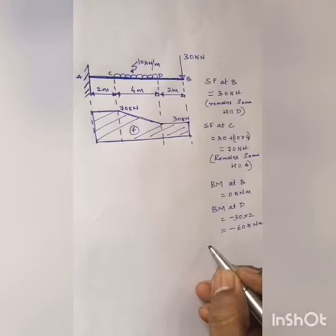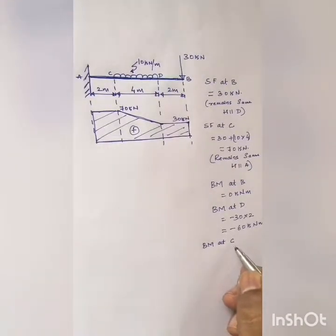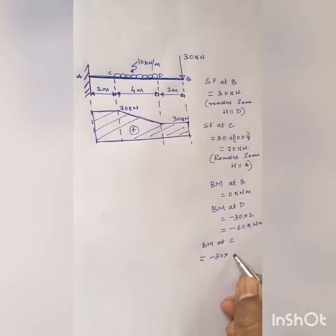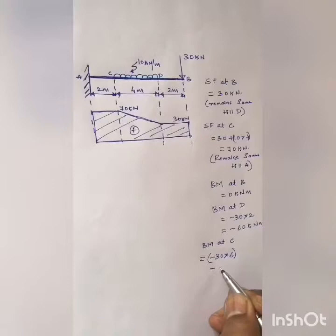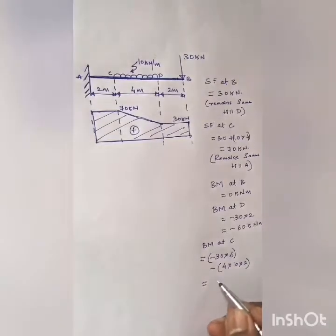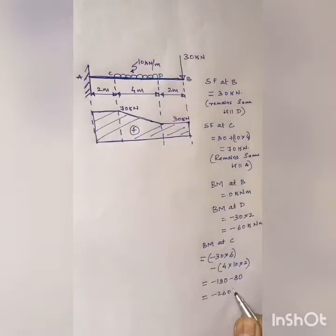Next I need to find out the bending moment at point C. I need to consider the bending moment due to the point load as well as the bending moment due to the UDL. The point load is 30 kilo Newton and the perpendicular distance from point C to the 30 kilo Newton load is 6 meters, so it becomes minus 30 into 6. Next, I convert the UDL into its resultant — load intensity into length — that is 10 into 4, acting at the midpoint which is half of 4, giving minus 10 into 4 into 2. So the bending moment at C is minus 180 minus 80, totalling minus 260 kilo Newton meter.